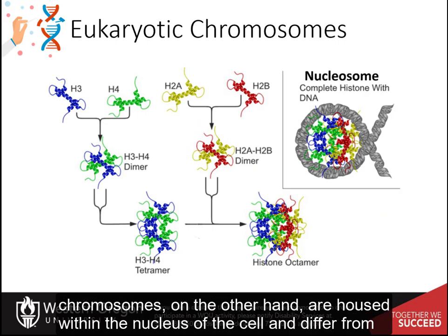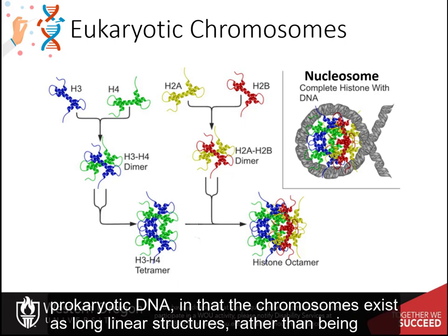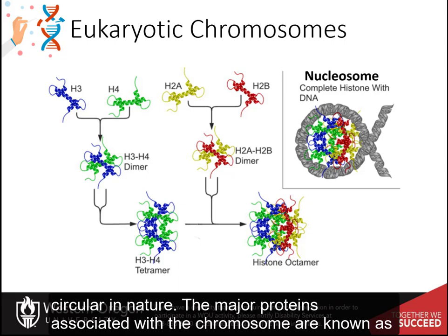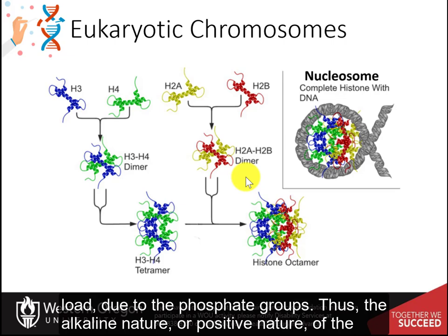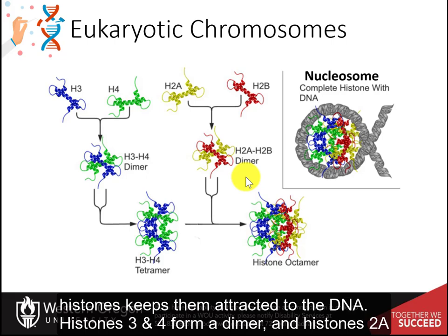Eukaryotic chromosomes, on the other hand, are housed within the nucleus of the cell and differ from prokaryotic DNA in that the chromosomes exist as long, linear structures rather than being circular in nature. The major proteins associated with the chromosome are known as histones. Histones are highly alkaline proteins. Note that DNA has a lot of negative charge load due to the phosphate groups. Thus, the alkaline, or positive nature of the histones, keeps them attracted to the DNA.